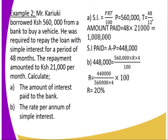Next example: Mr. Kariuki borrowed 560,000 from a bank to buy a vehicle. He is required to repay the loan with simple interest for a period of 48 months. The repayment amount is 21,000 per month. Calculate: (1) the amount of interest paid to the bank, and (2) the rate per annum of the simple interest. The principal is 560,000. The total amount paid is 48 × 21,000, which equals 1,008,000.